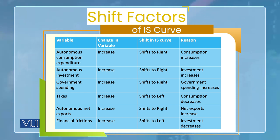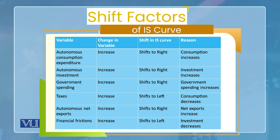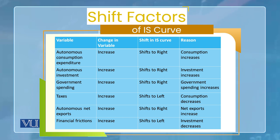The third variable is government spending. If government spending increases, the IS curve shifts to the right, because government spending is also a part of total output or aggregate demand. However, if taxes are increased, IS shifts to the left — because higher taxes reduce disposable income, which reduces consumption, and therefore final output also decreases. Similarly, if autonomous net exports increase, IS shifts to the right again.